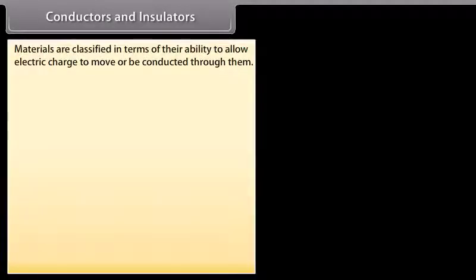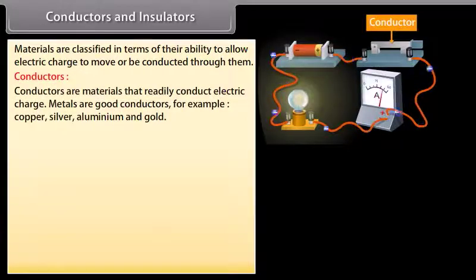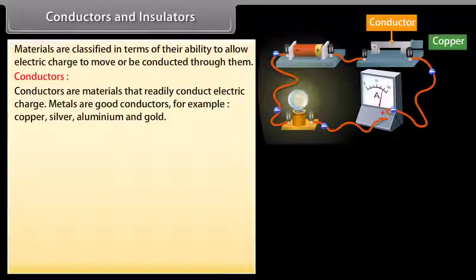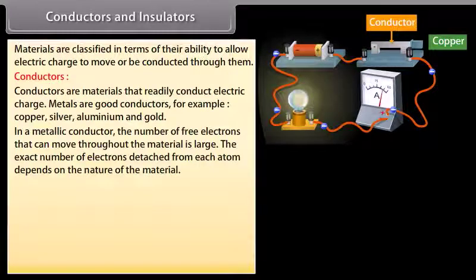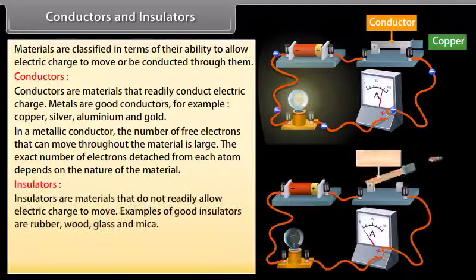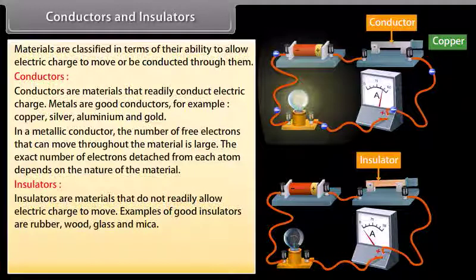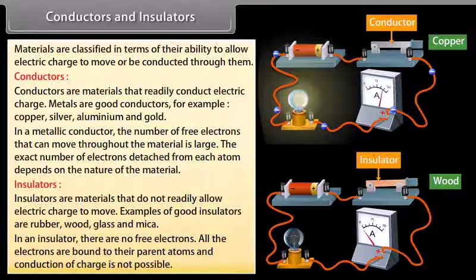Conductors and insulators: Materials are classified in terms of their ability to allow electric charge to move or be conducted through them. Conductors are materials that readily conduct electric charge; metals are good conductors — for example, copper, silver, aluminum, and gold. In a metallic conductor, the number of free electrons that can move throughout the material is large. Insulators are materials that do not readily allow electric charge to move; examples include rubber, wood, glass, and mica. In an insulator, all electrons are bound to their parent atoms and conduction of charge is not possible.